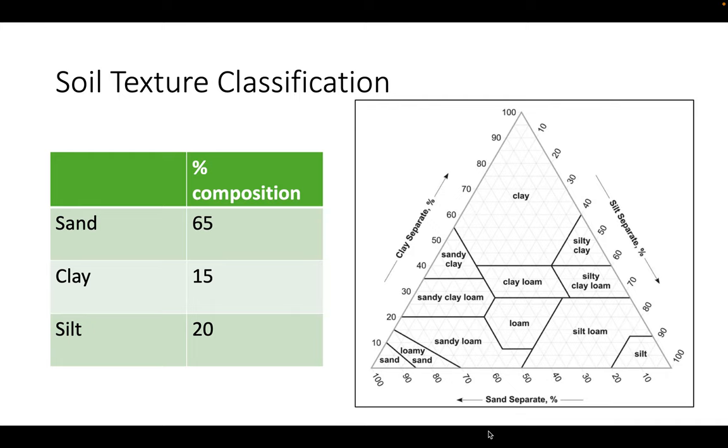Now let's work through an example using the ternary diagram to determine soil texture. Now we have percentages of sand, clay, and silt as our three variables. Let's say that our soil sample is composed of 65% sand, 15% clay, and 20% silt. It doesn't matter which component you start with, so let's just start with sand.